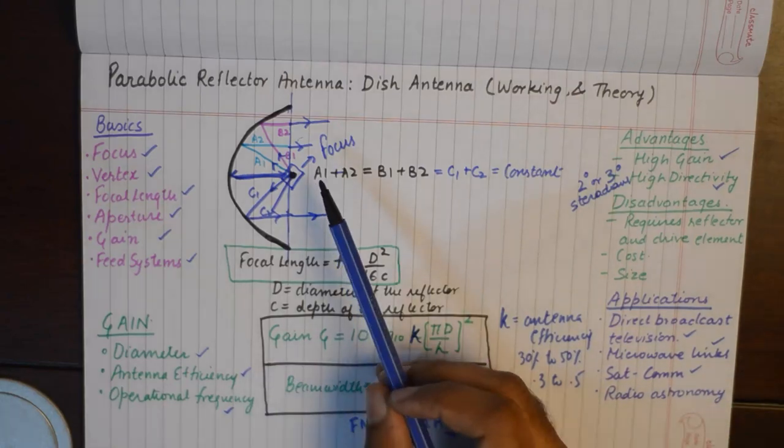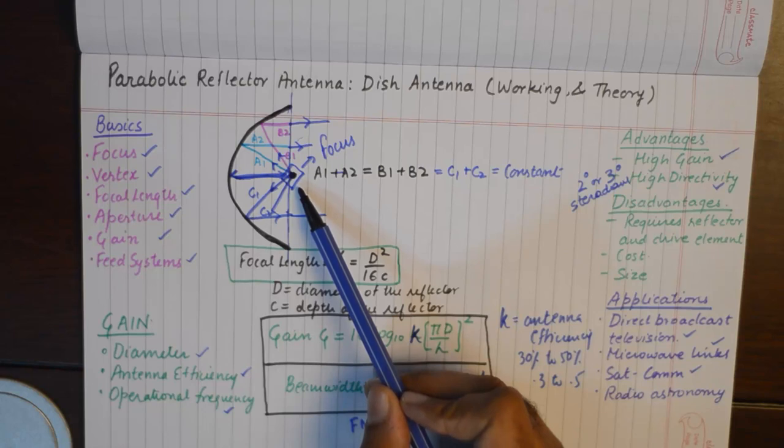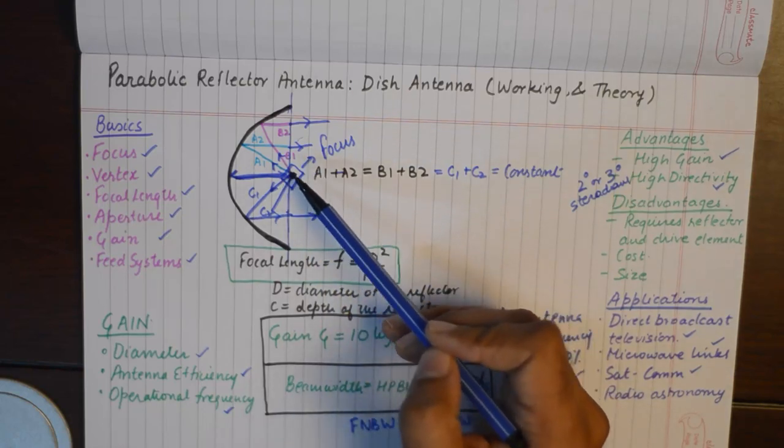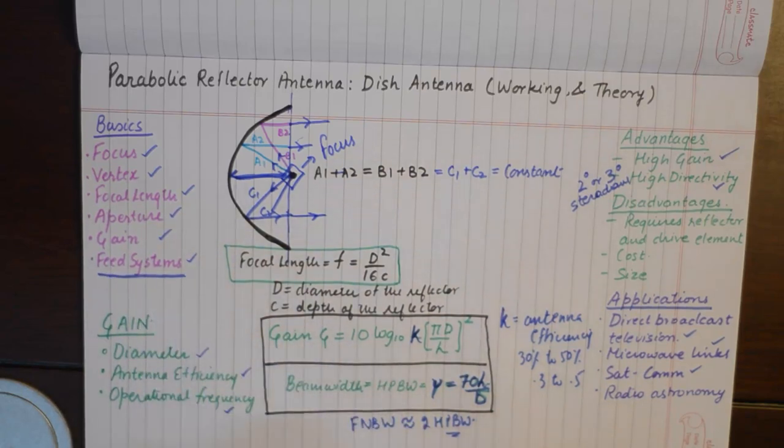How the driving element or the antenna which radiates the signal is placed in focus is known as the feed system. There are different types of feed systems for parabolic reflector antennas that we are going to discuss in the next tutorial.